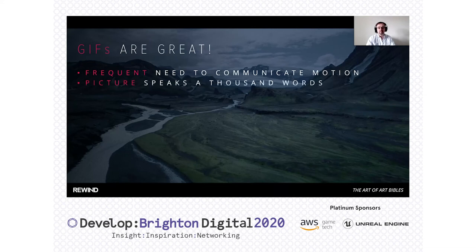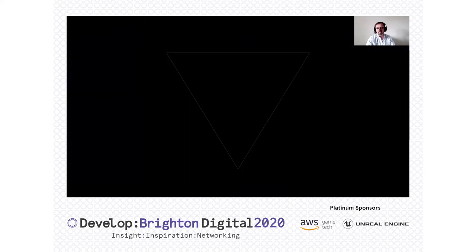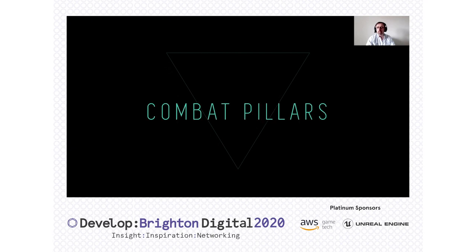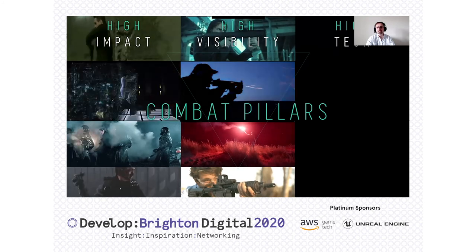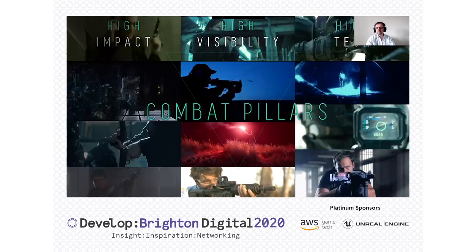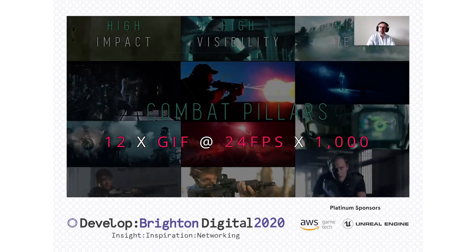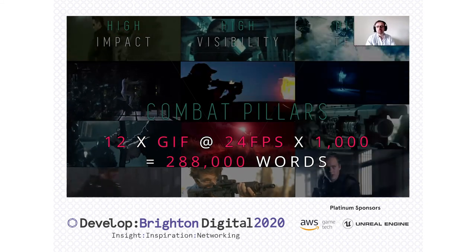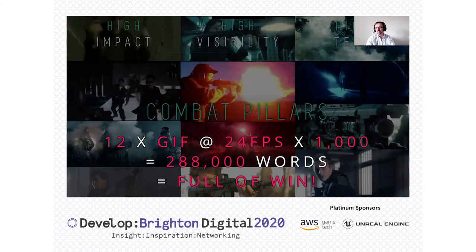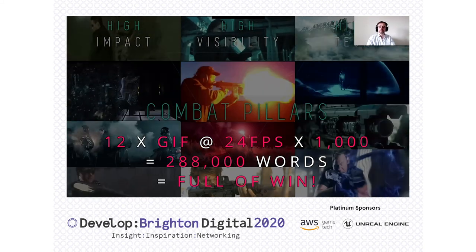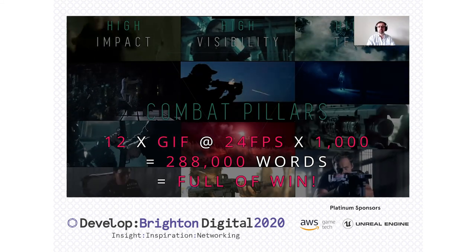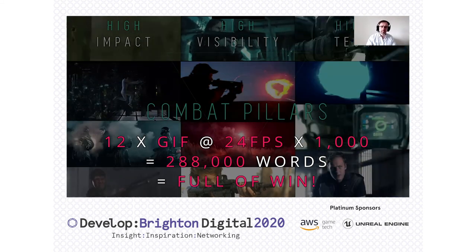If I was going to call out combat pillars, there might be areas really based around movement — communicating the fact this is going to be high impact, high visibility, and high tech. With 12 GIF images there, that's almost 300,000 words — full of win! You might want to tone it down a little, and watch your file sizes too. The more videos and animations you put into your decks, the less portable they become.